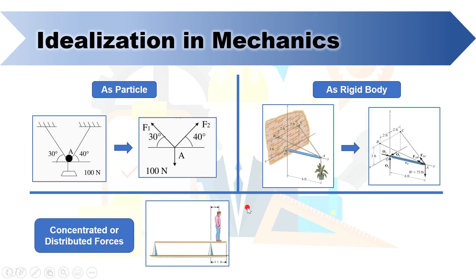This first example shows a man standing on a plank. When analyzing the forces exerted on the plank, you may idealize the weight of the man as a concentrated force or purely acting on a particular point on the plank. This assumption simplifies the computation that might involve calculating the total area of the contact of his feet to the plank just to include the concept of pressure.